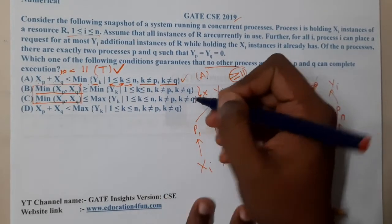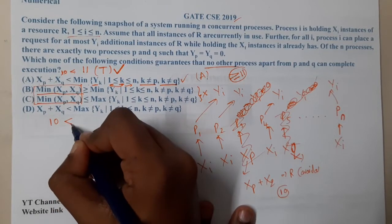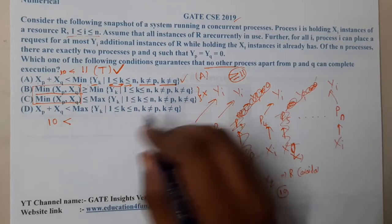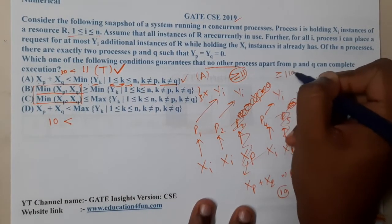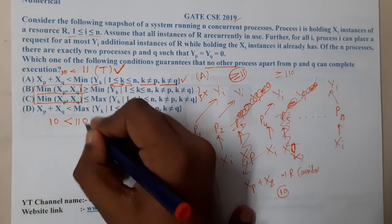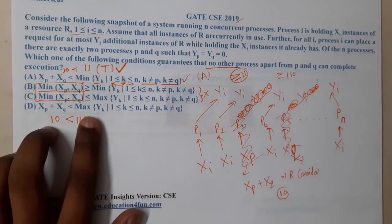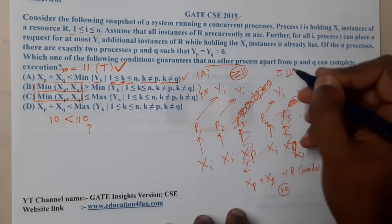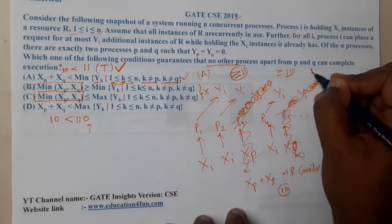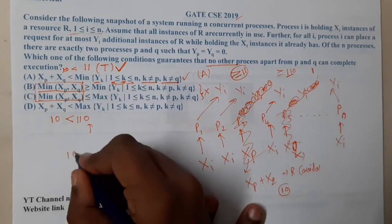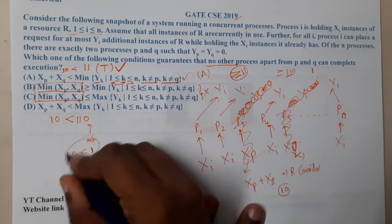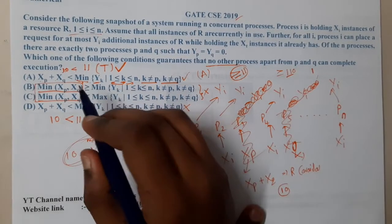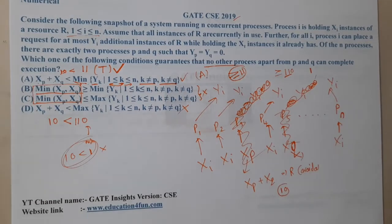Let us also check option D. Option D uses the maximum of y_k instead of the minimum. This statement might be true in some cases — for example if there is a requirement of 110 — but it is not a proper guarantee. We always check with the minimum, because if there exists a process with a very small request (like 1), then 10 available resources would satisfy it. Using maximum could lead to incorrect conclusions, so we always use the minimum.